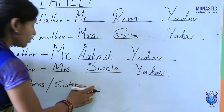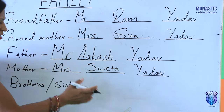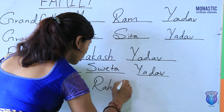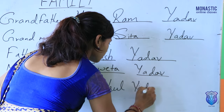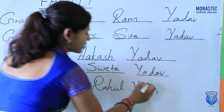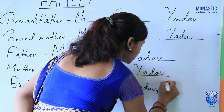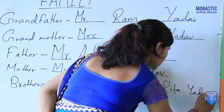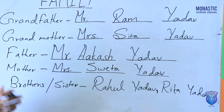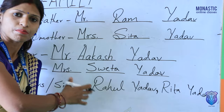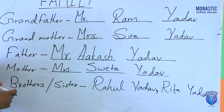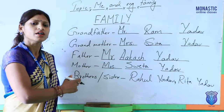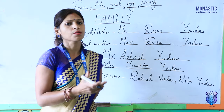And here, for brother or sister's name — just anything we can write. For example, brother's name: Rahul Yadav. If there is a sister also, we can write Rita Yadav. By this way, you have to know your family members' names, and you can also write uncle's name, auntie's name, cousin's name, and more.